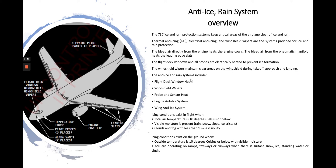The anti-ice and rain systems include flight deck windows — you can see them here — and windshield wipers on the windows. The forward windows, probe and sensor heat — you can see the probes here — temperature probes, pitot probes, and alpha vanes. The engine anti-ice system covers the engine cowl lip here. The wing anti-ice system: only the three inboard leading edge slats are heated.